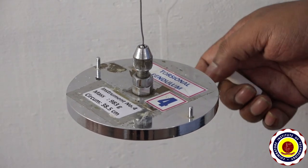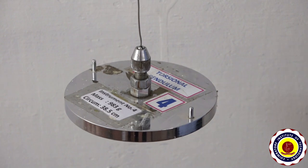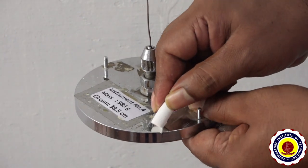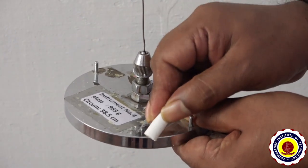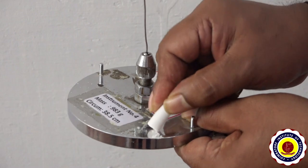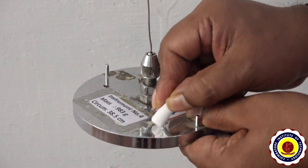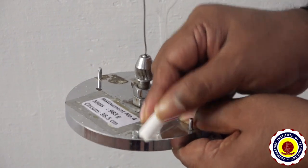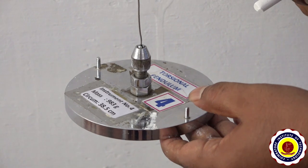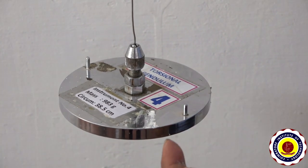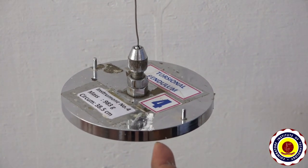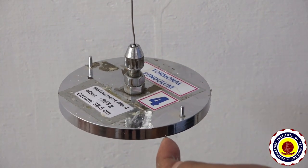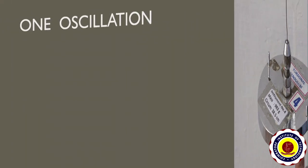After fixing the length of the pendulum, we are going to make a marking on the pendulum using a chalk piece. This marking will act as the point of reference for counting the number of oscillations.